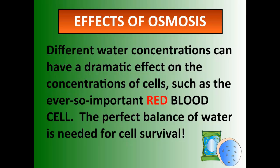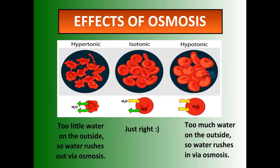Where else do we see this? Blood cells. Red blood cells are a perfect balance of water needed for cell survival. If you increase or decrease the water concentration around a blood cell, it can have dramatic effects on how that cell operates. For example, if we have a hypertonic solution — where there's too little water on the outside — water will move out of the blood cells and they shrivel up. If there's too much water around the blood cells, water will rush in and cause them to burst, like water balloons. So it's got to be just right — that perfect balance of water moving in and out keeps red blood cells in their nice donut shape so they can transport oxygen.